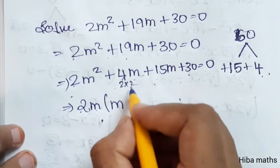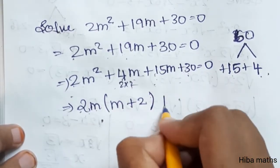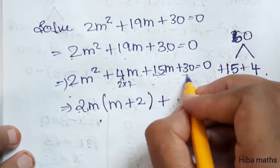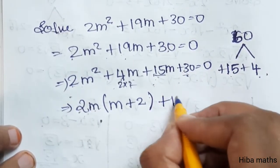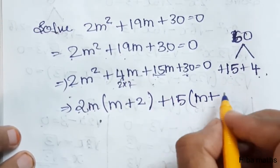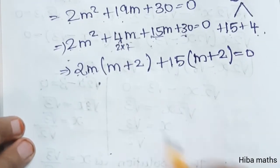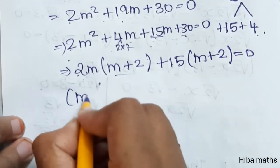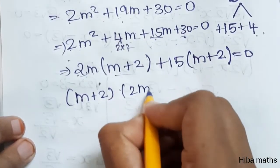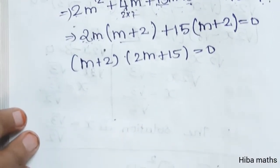From the first pair, 2m is common, giving 2m(m plus 2). Then 15 is common from the second pair, giving 15(m plus 2). Now both terms share (m plus 2) as a common factor, so 2m(m plus 2) plus 15(m plus 2) equals 0, meaning (2m plus 15)(m plus 2) is equal to 0.